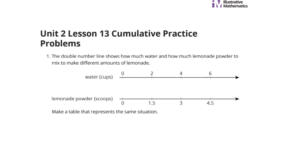Question 1. The double number line shows how much water and how much lemonade powder to mix to make different ounces of lemonade. Water cups: 0, 2, 4, 6. Lemonade powder scoops: 0, 1 and a half, 3, 4 and a half. Make a table that represents the same situation.